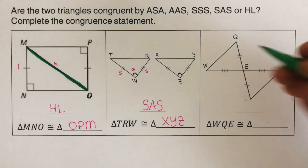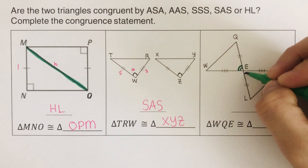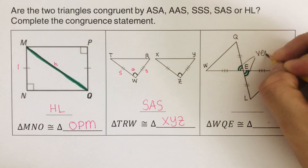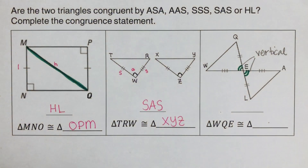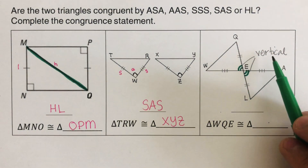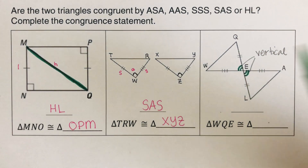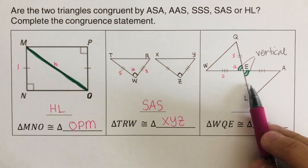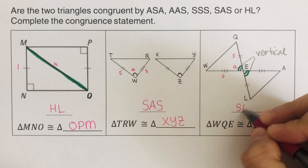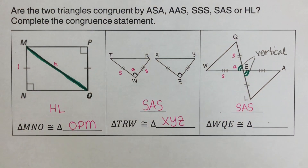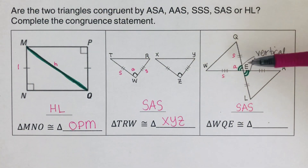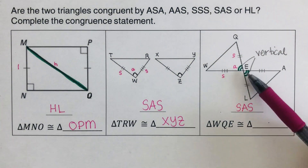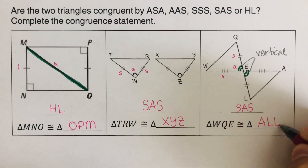For the third one, please remember that these angles are congruent — they are called vertical angles. Vertical angles are automatically congruent even if they are not ticked. So we have a side, a vertical angle, and a side — this is SAS. The triangle is named W, Q, E, and the other side would be A, L, E. So triangle WQE is congruent to triangle ALE.